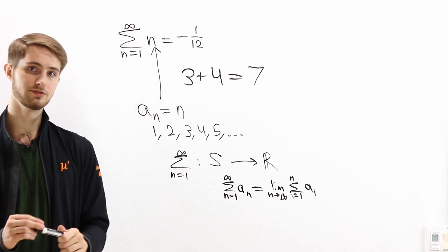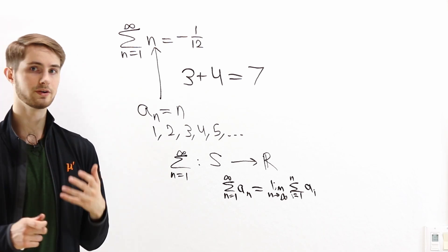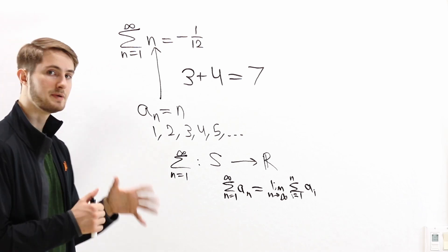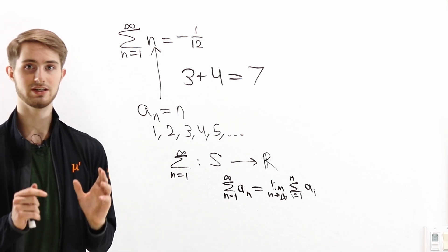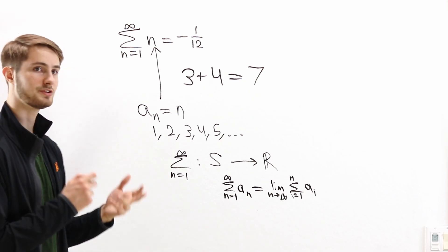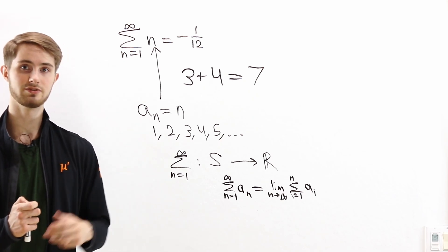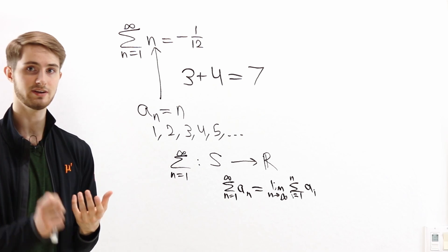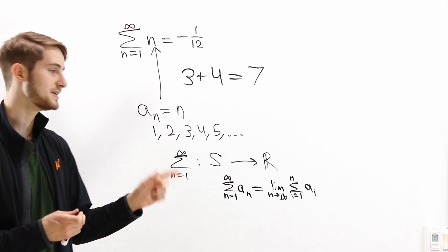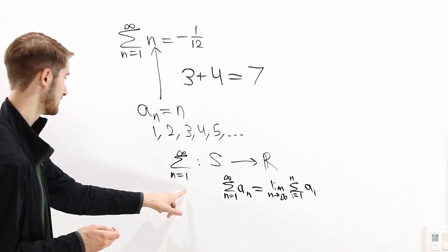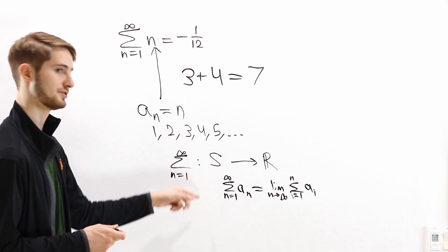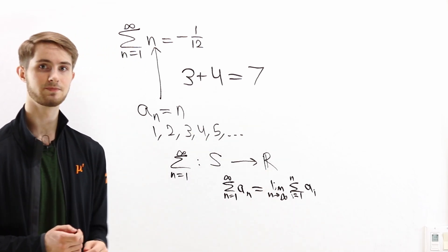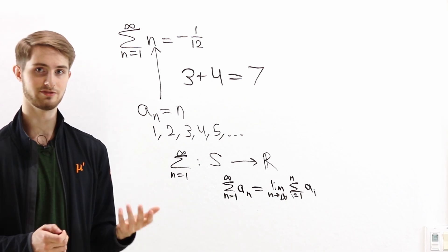The main point of this video is that if you're going to argue about whether the infinite sum of some sequence equals a certain number, you should start by making sure you agree on the definition of infinite sum. Because a lot of times when people disagree about the value of an infinite sum, they aren't disagreeing about the math — they both agree that the same proofs are valid. What they disagree on is what it means to take an infinite sum. In other words, they're using two different functions, and if you apply two different functions to the same input you can get two different answers.